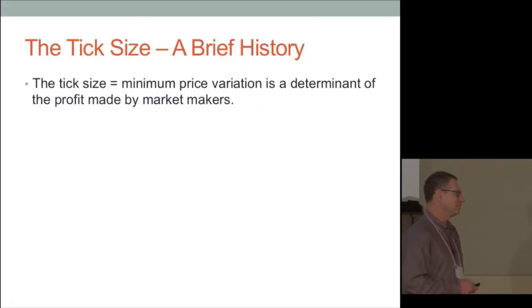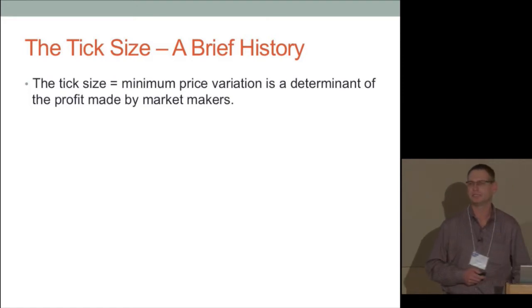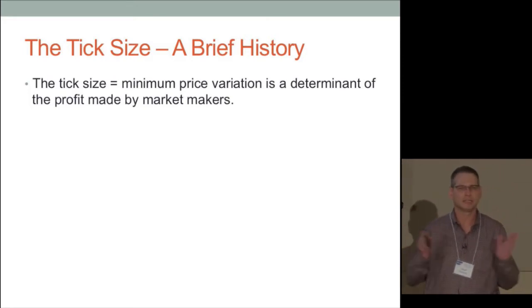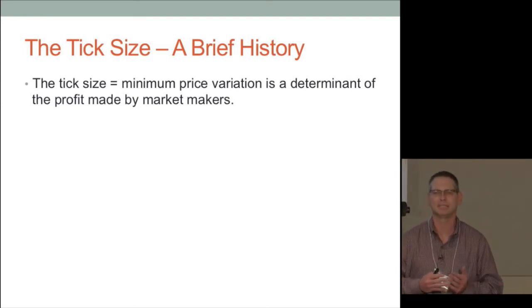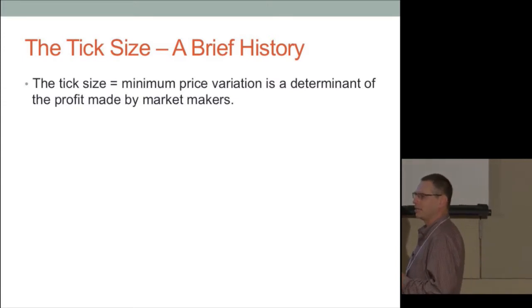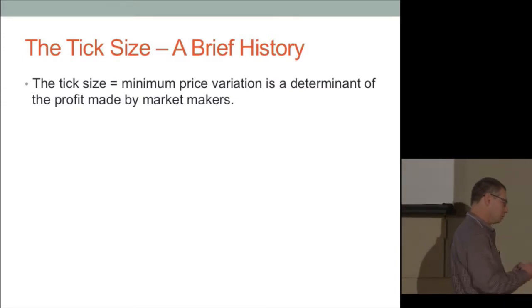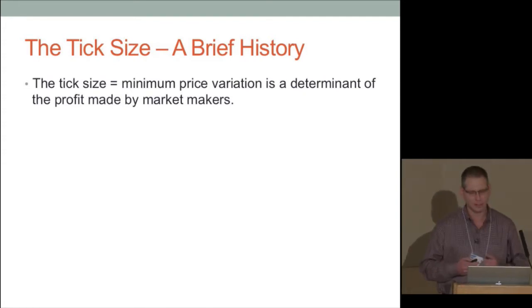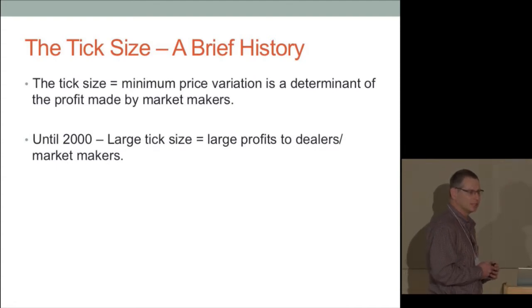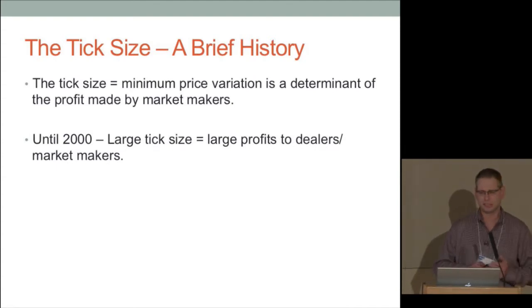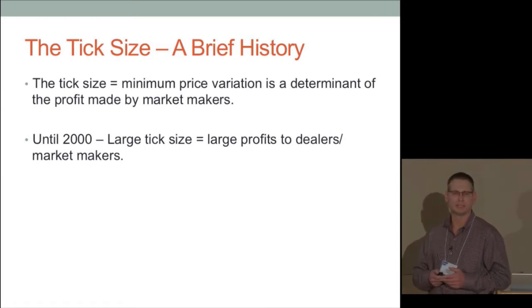To those of you who joined this profession in the last five years, let me give you some history of the tick size. As Mao explained, it's a minimum price variation — it essentially determines the profits of market makers. The bid-ask spread cannot be smaller than the tick size, and the spread is supposed to compensate market makers and liquidity providers for what they do.